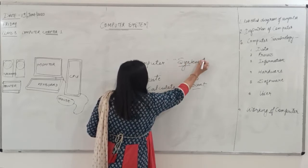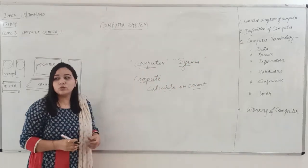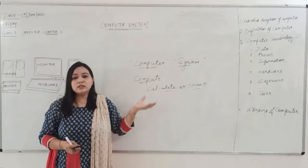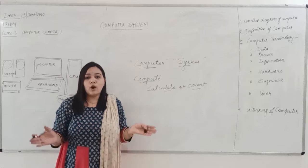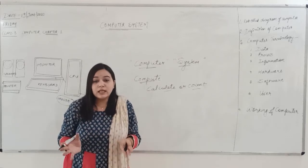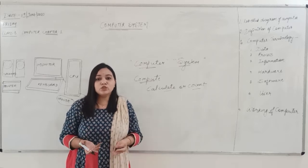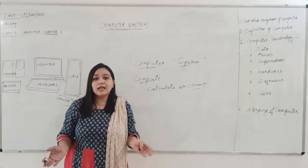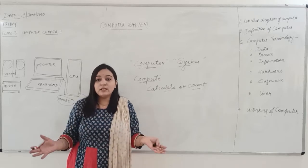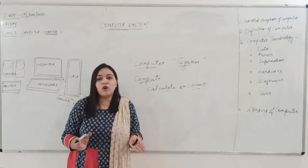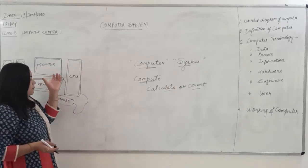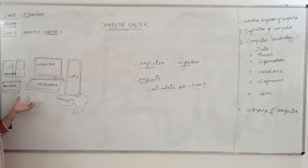Now we will be discussing the meaning of 'system'. We are not saying just computer, we are calling it a computer system. System means a combination or collection of components. A computer is not a single machine — it is a collection of hardware and software components which, when brought together, perform tasks for us.